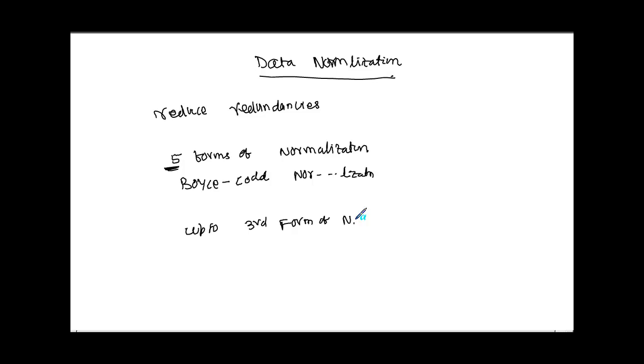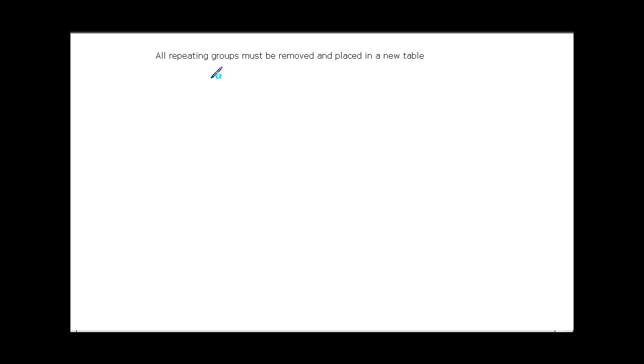In this video, what we are going to discuss is what these three forms are, and we will give some examples so that we can see the problem and bring intuition so we can understand with concrete examples. The first form of normalization states that all repeating groups must be removed and placed in a new table.